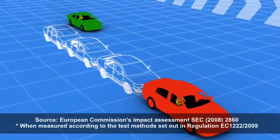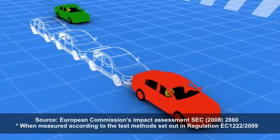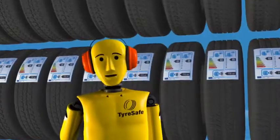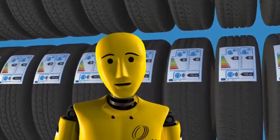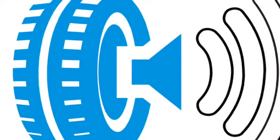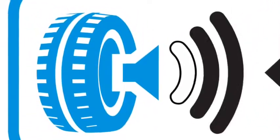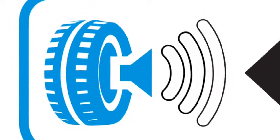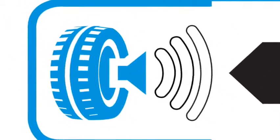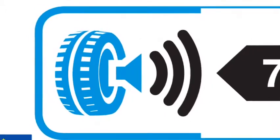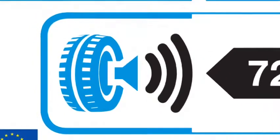And finally, exterior noise emissions. This is the external noise or sound pollution made by your tires. Tires will be rated in one of three categories. Three black waves indicates the tire produces the highest amount of noise. One black wave indicates the tire emits the lowest level of noise.